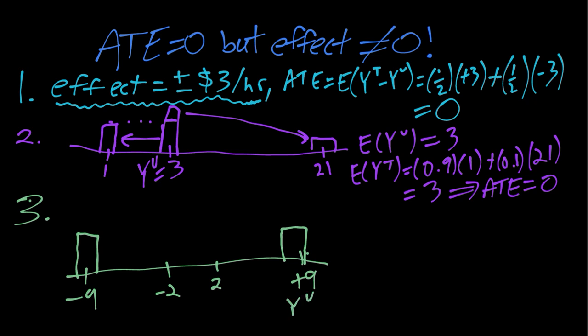And then for the treated, in this case what the treatment does is it moves the distribution in like that. So instead of negative 9 positive 9, now it's negative 2 and positive 2.